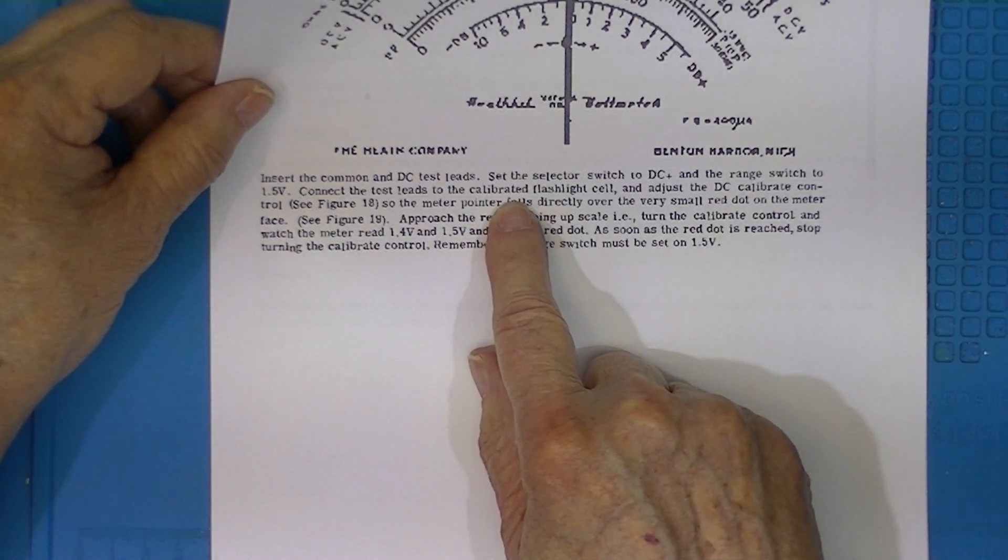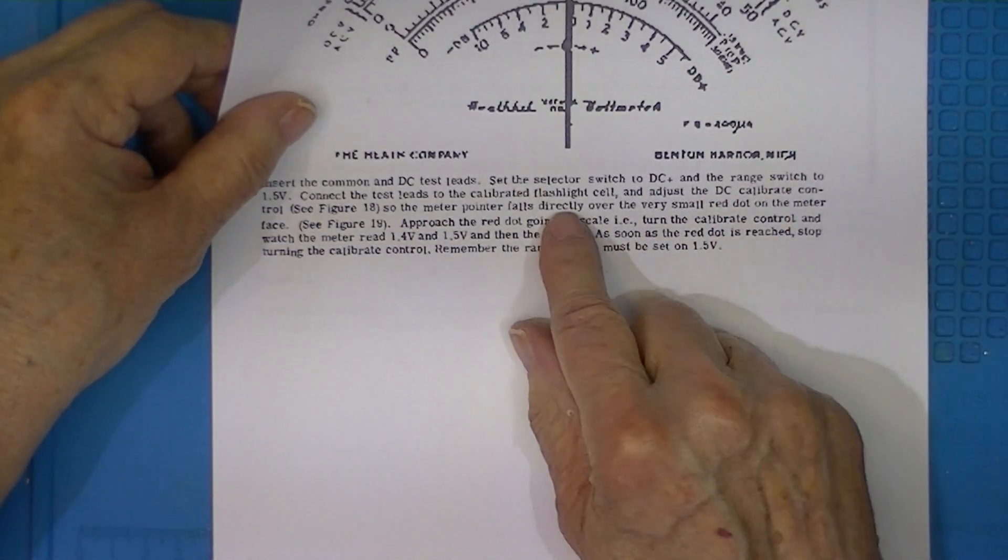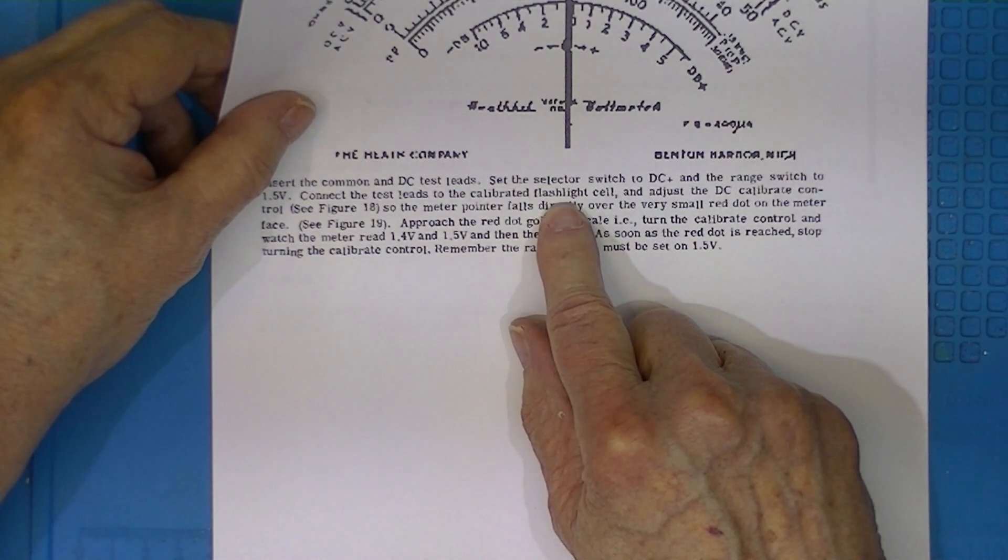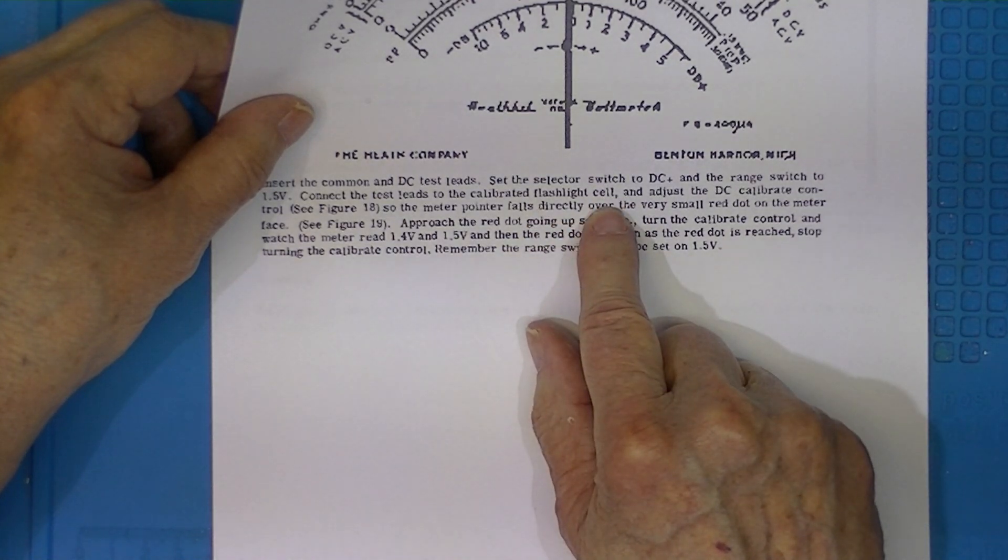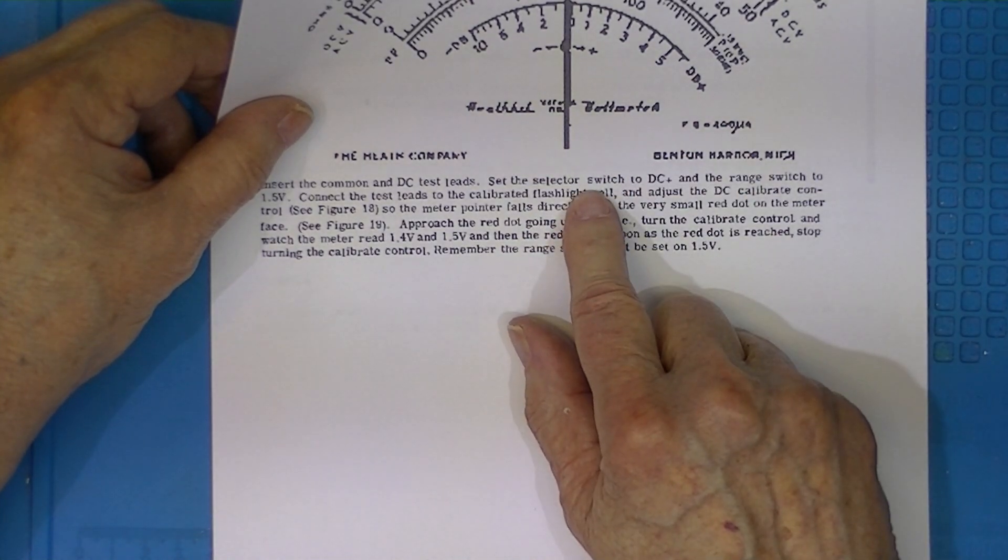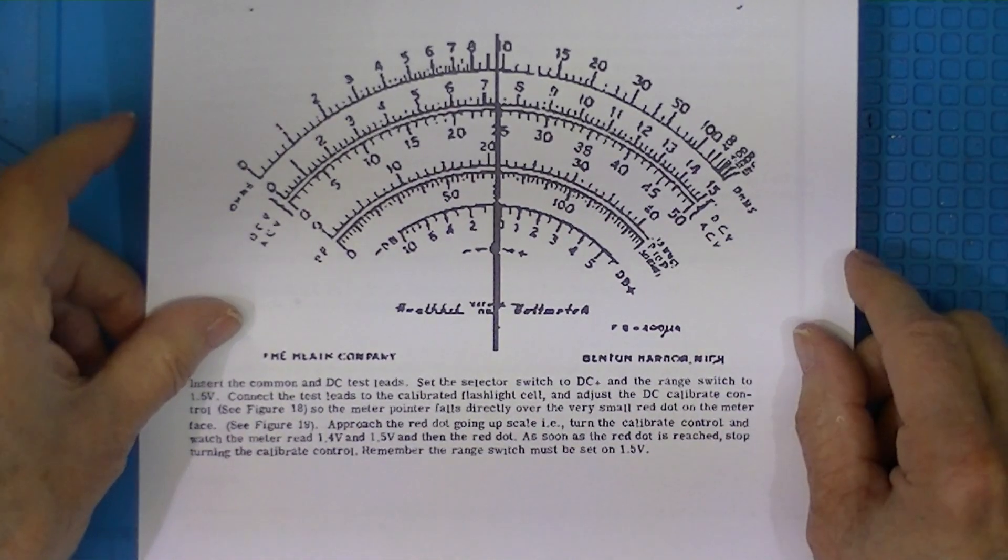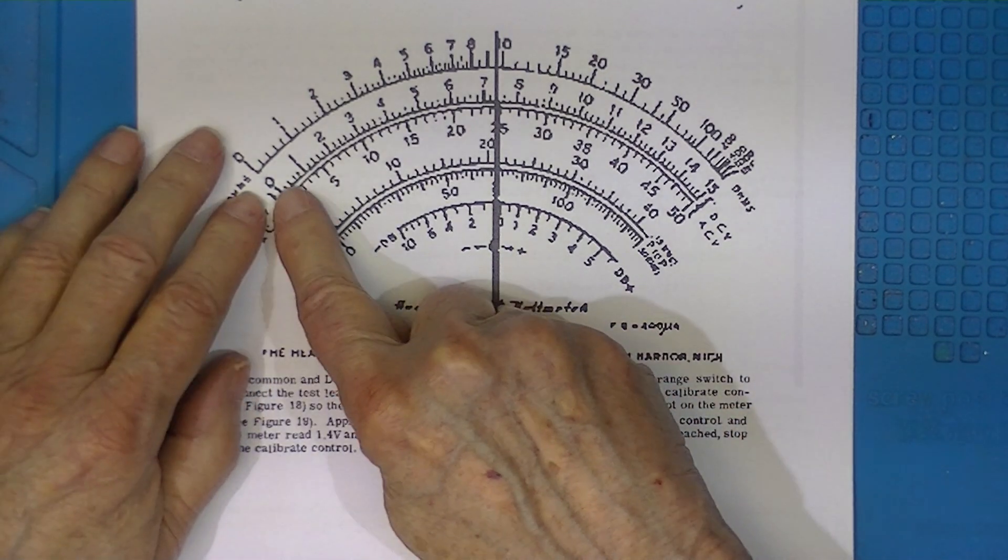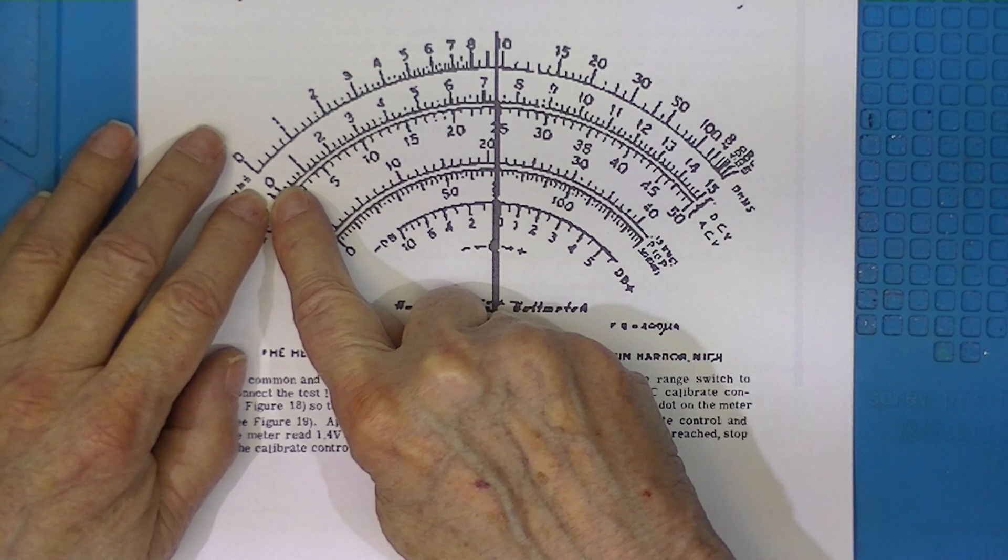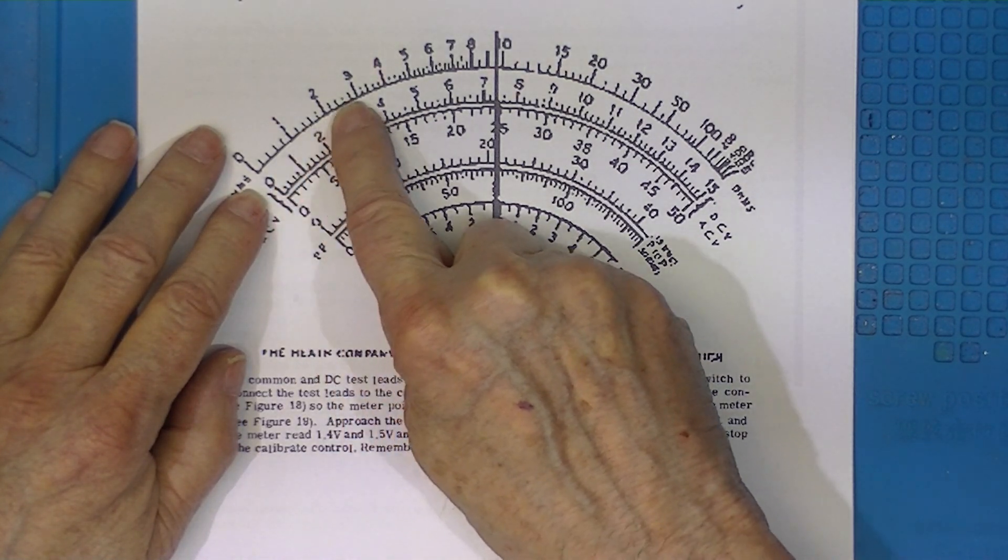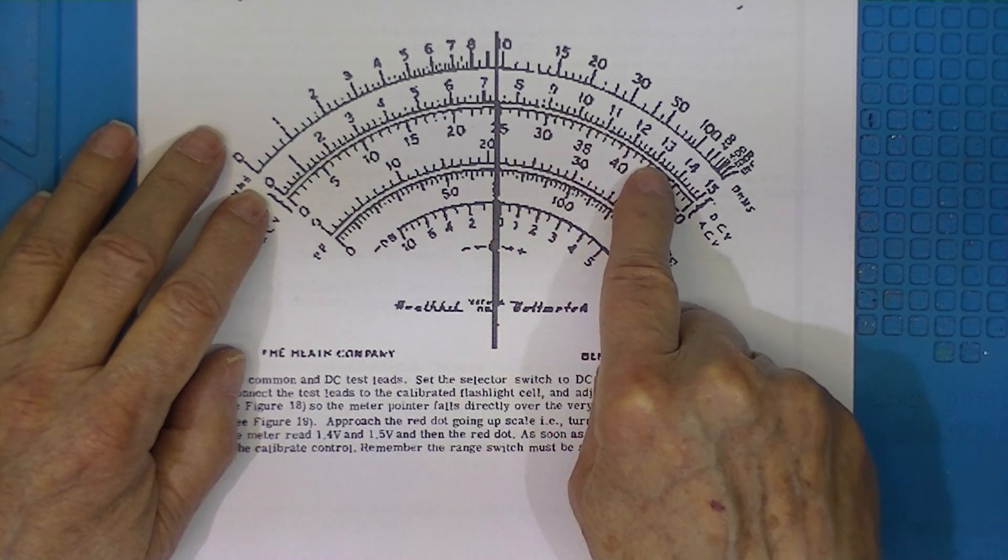When a carbon-zinc cell—not an alkaline or mercury or anything else, good old fashioned, the kind that age and destroy the interior of the equipment—whenever brand new, voltage is 1.56 volts. Look carefully at this scale. If we multiply by 0.1, the scale becomes 0 to 1. Full scale is 1.5.